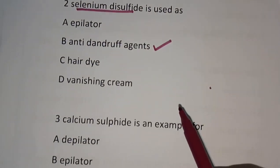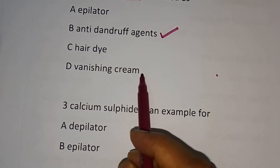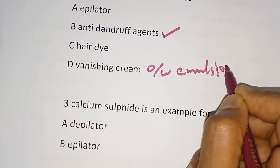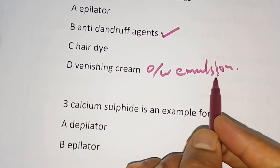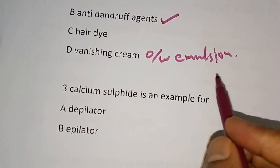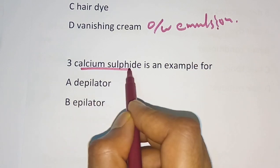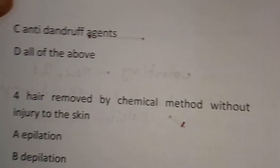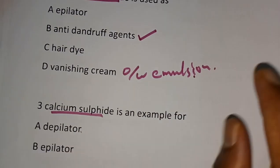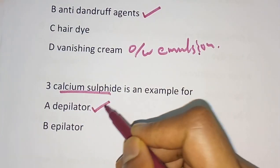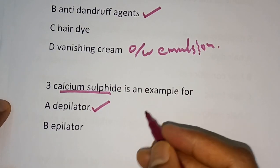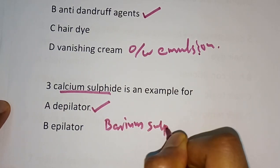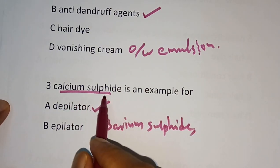Question number 3: Vanishing creams are oil-in-water type emulsions. Next question: Calcium sulfide — is it an example of a depilator, epilator, anti-dandruff agent, or all of the above? The correct answer is depilator. Calcium sulfide is a depilator. Another example is barium sulfide, which is also a depilator, but the most commonly used is calcium sulfide.